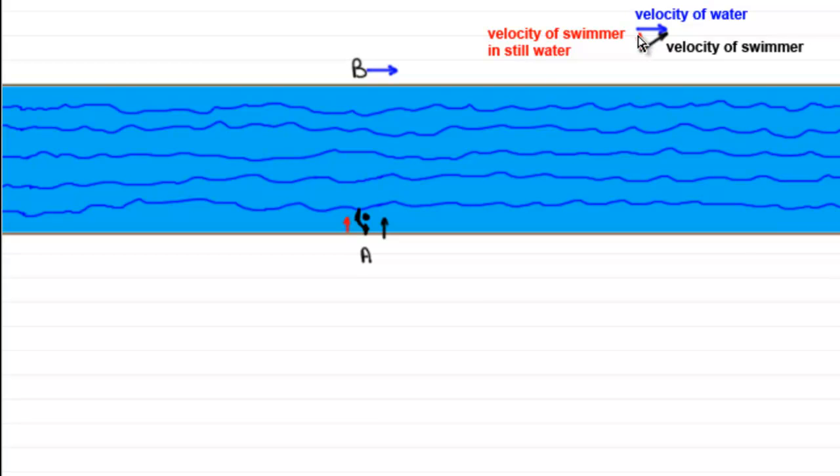the velocity of the swimmer in still water, illustrated by the red vector, combined with the velocity of the water, illustrated by the blue vector, resulted in the swimmer swimming at this angle here, with this velocity.